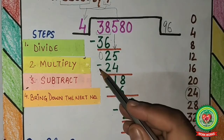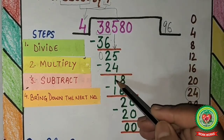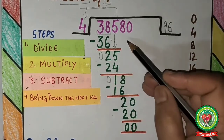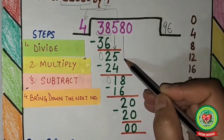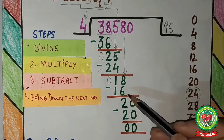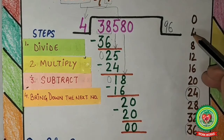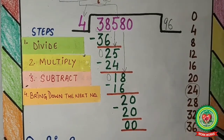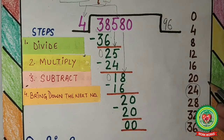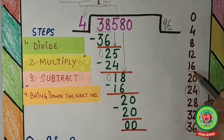Next step is subtract: 5 minus 4 is 1, and 2 minus 2 is 0. Next step is bring down the next number. 8 comes down, making it 18. Again, see the table of 4. 18 does not appear, so we need the number just less than 18 that is a multiple of 4. That is 16.